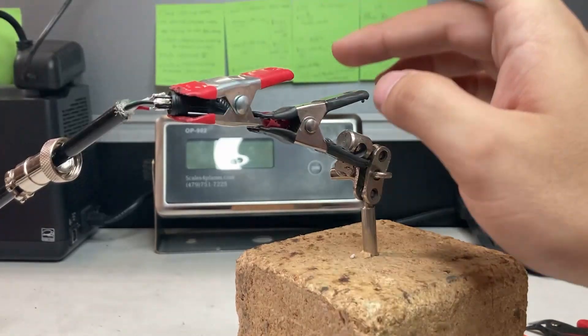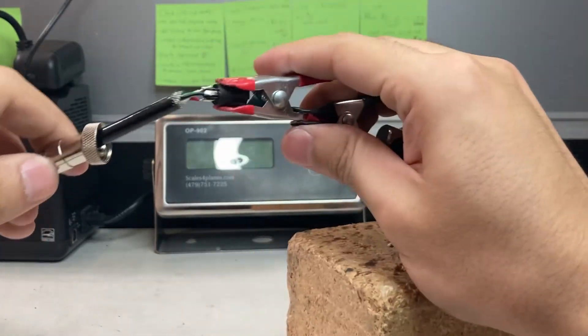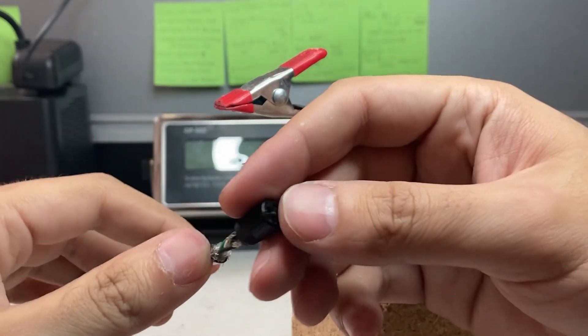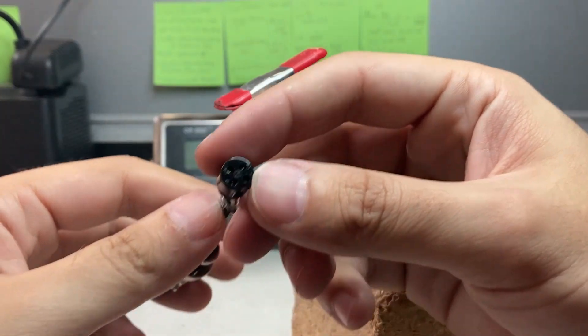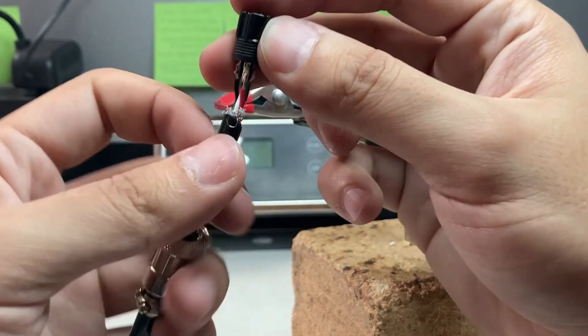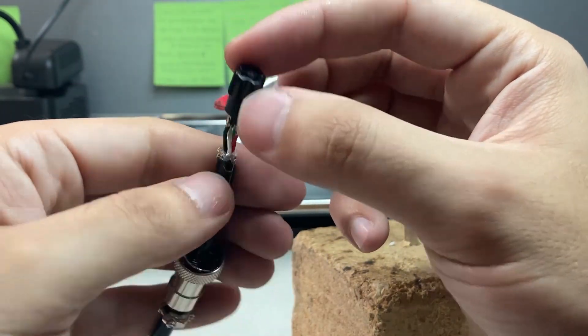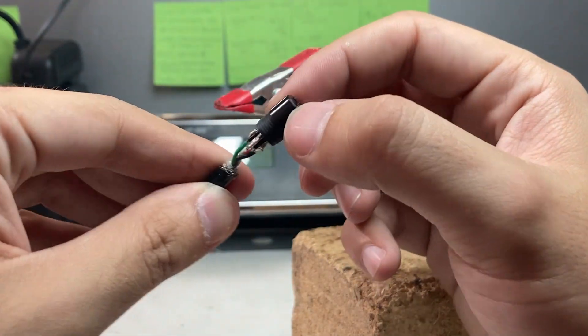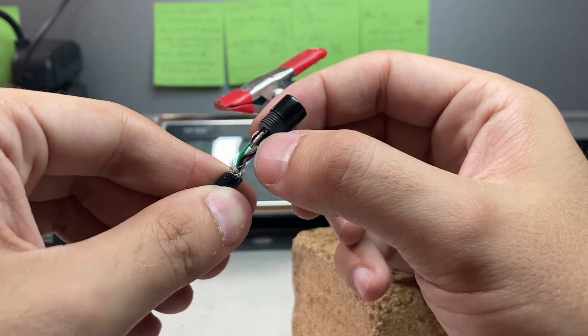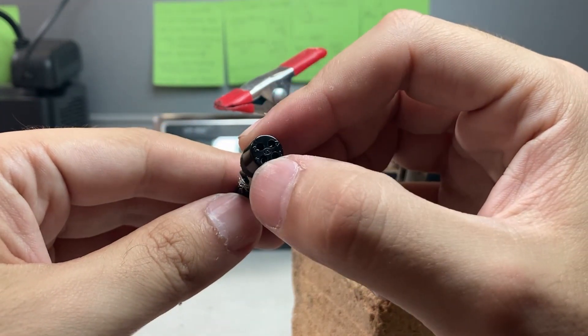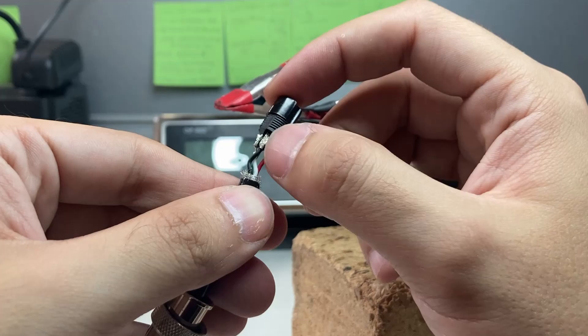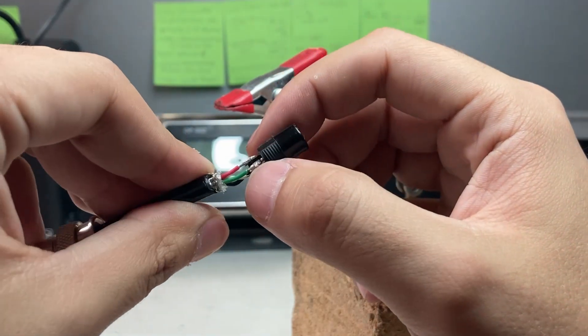So you can see this is where you check. Pin 1 is red. Pin 2 is green. Pin 3 is white. Pin 4 is black. Make sure they're not crossing.